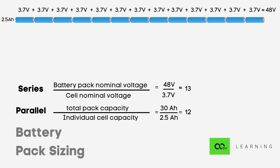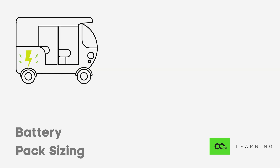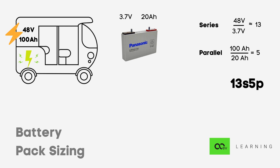Let's consider another example for a three-wheeler application. The battery pack is 48 volt and 100 Ah, and the single cell is a 3.7 volt 20 Ah prismatic cell, which is larger in dimensions. Cells in series = 48 ÷ 3.7 = 13S, same as before. Cells in parallel = 100 ÷ 20 = 5P. So the overall battery pack configuration for the three-wheeler is 13S5P.